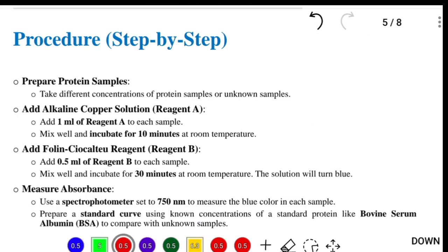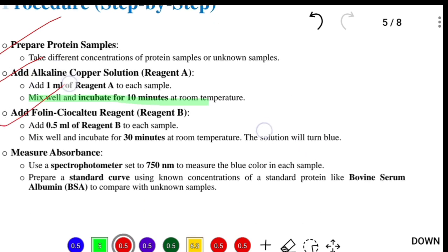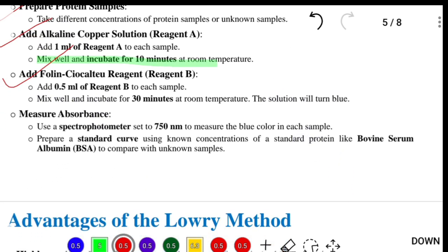These are the different steps: prepare protein samples, take different concentrations of protein samples or unknown samples, then add alkaline copper solution to each test tube and mix well. Incubate for 10 minutes at room temperature. You can follow all these steps to perform this method. At the end, you have to take optical density by using a spectrophotometer at 750 nanometers to measure the blue color in each sample.